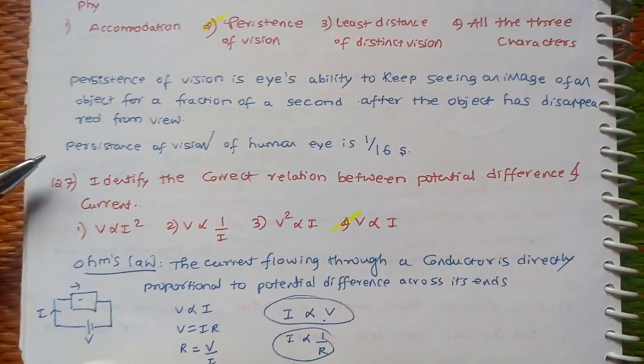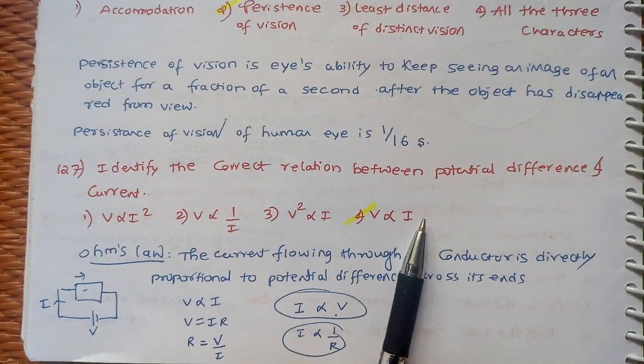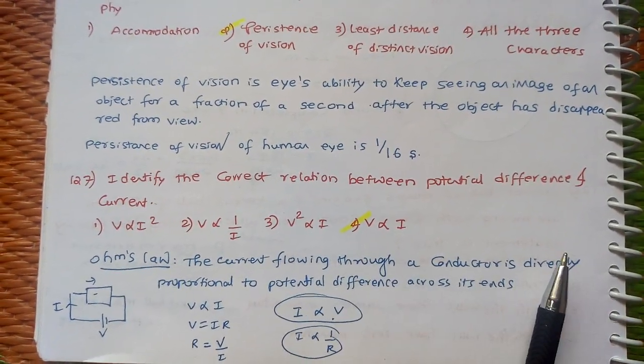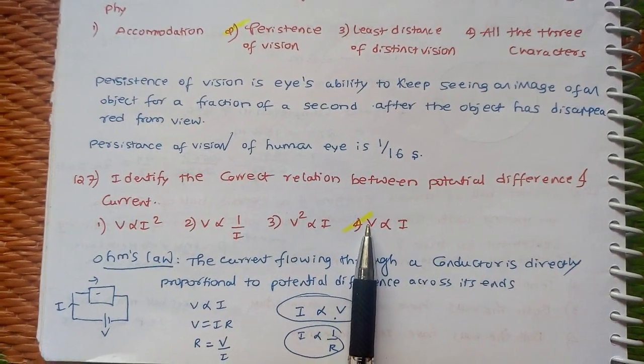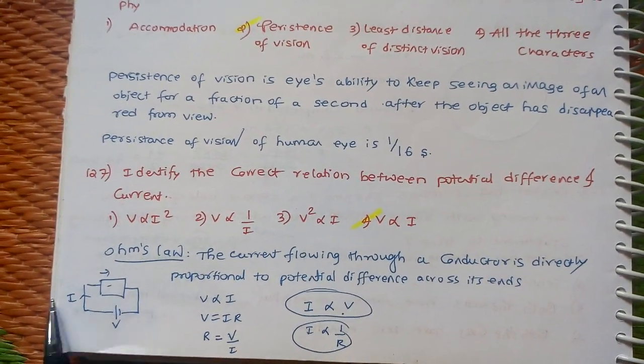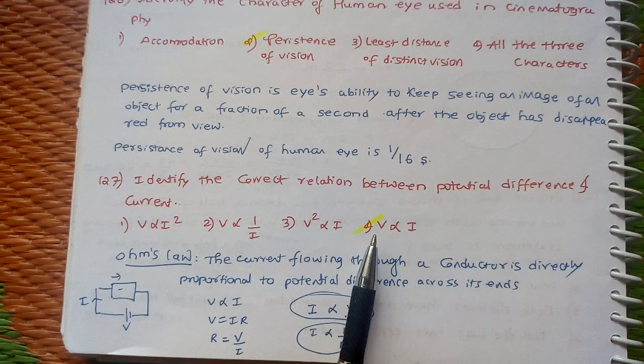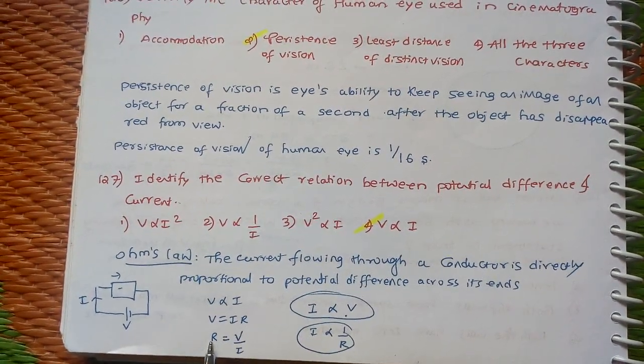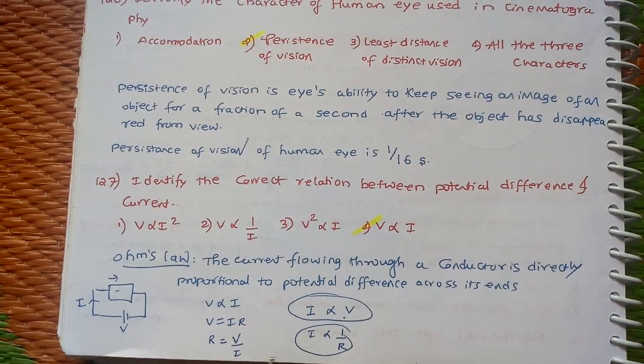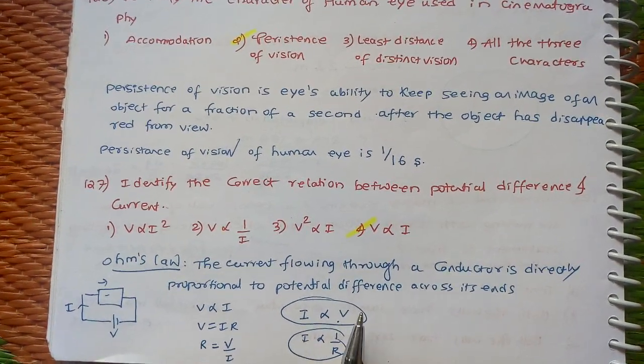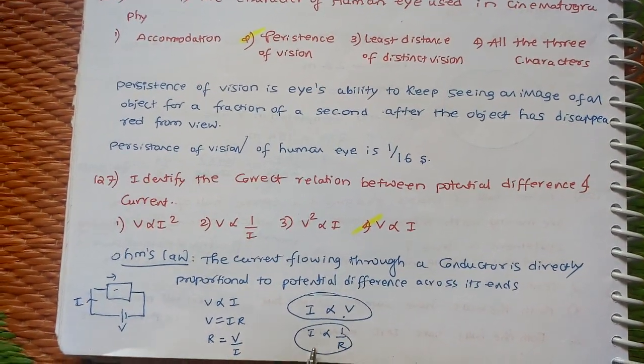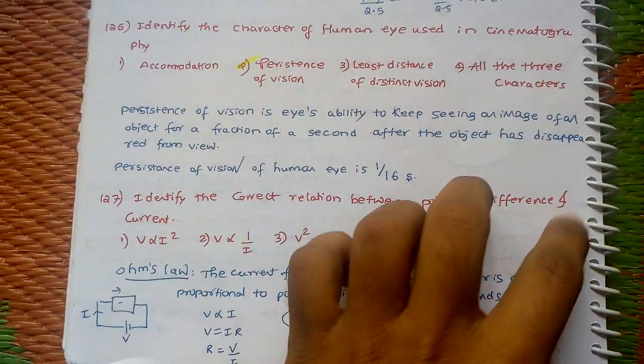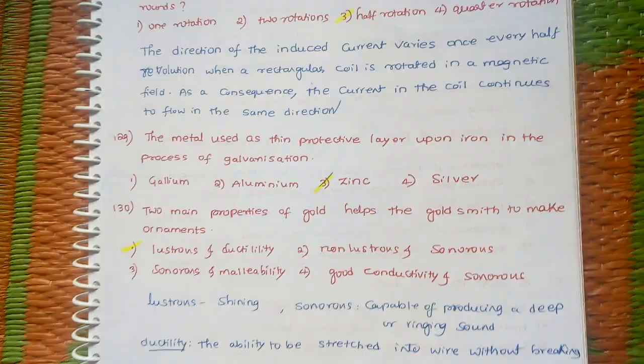This is an easy question. The correct relation is V is directly proportional to I. As you know, that is Ohm's law. The current flowing through a conductor is directly proportional to the potential difference across its two ends. V is directly proportional to I. V equals IR. R is V by I. Current is directly proportional to potential difference and inversely proportional to resistance. So answer is option 4.